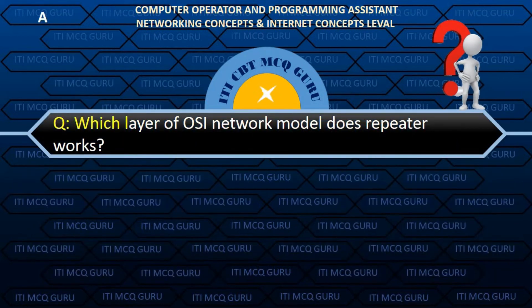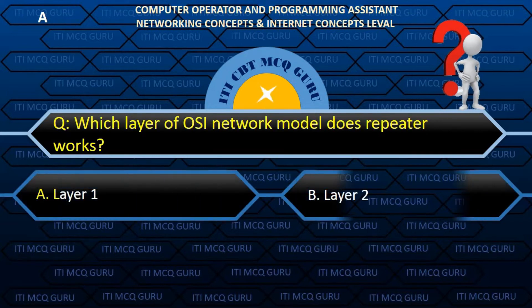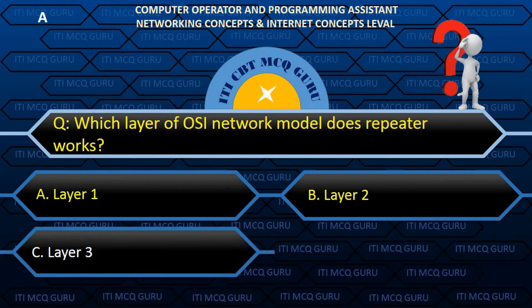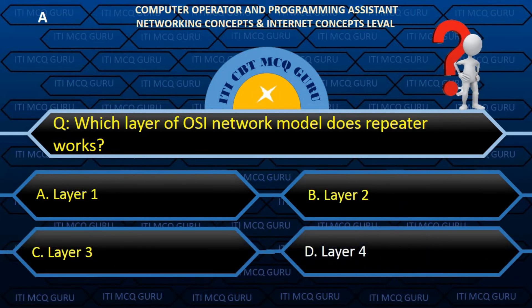Which layer of the OSI network model does a repeater work? A. Layer 1.